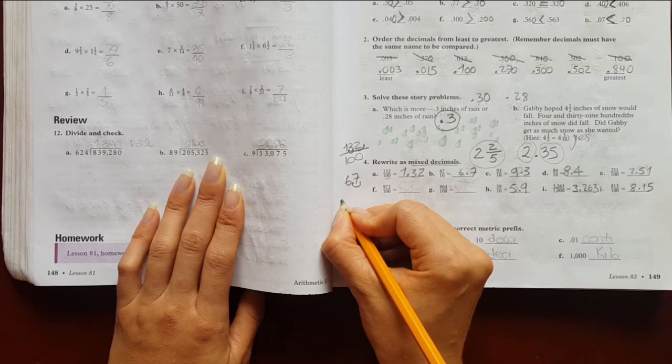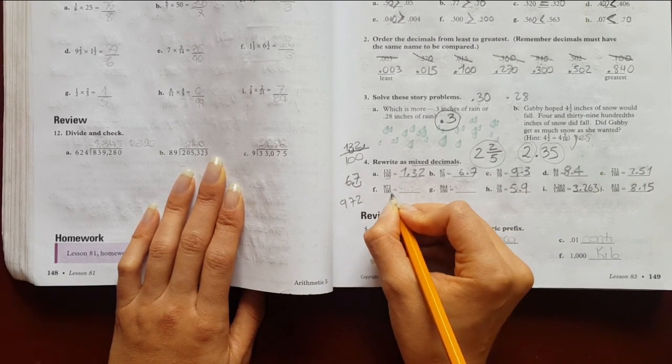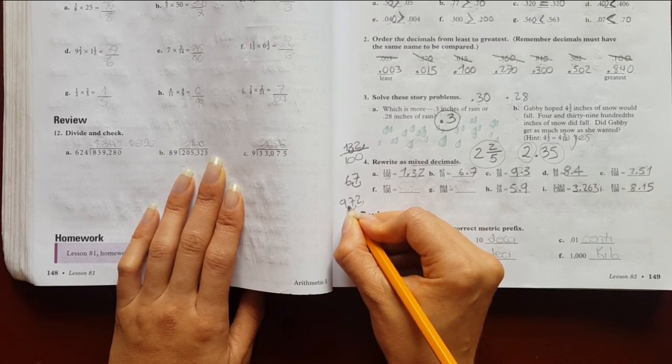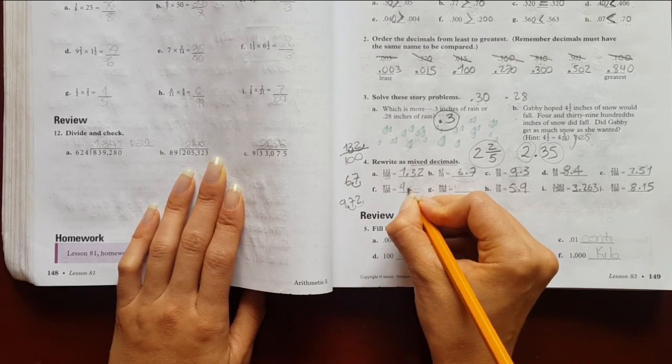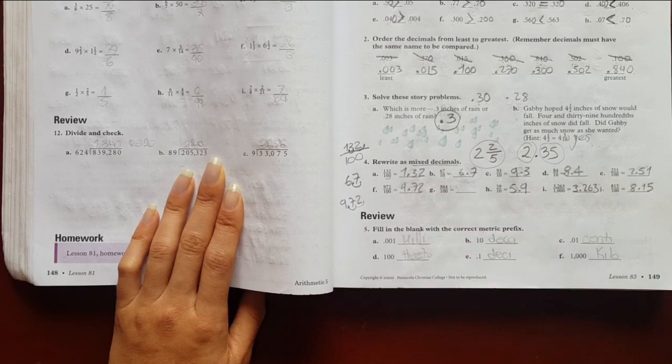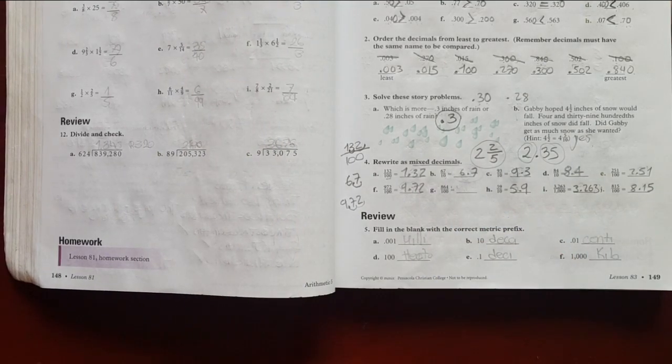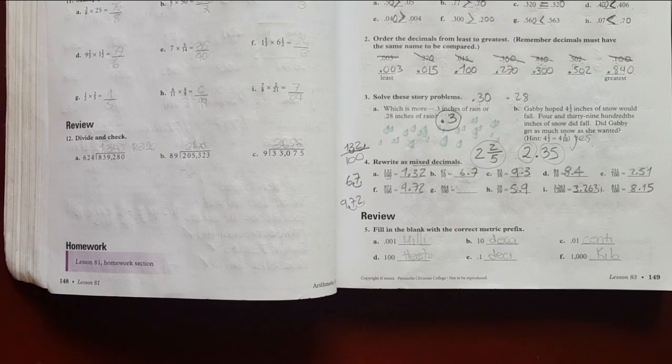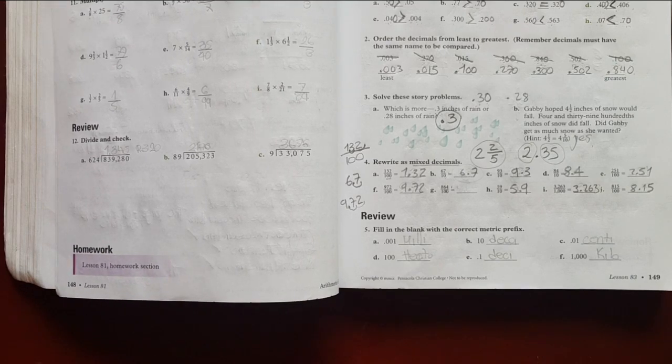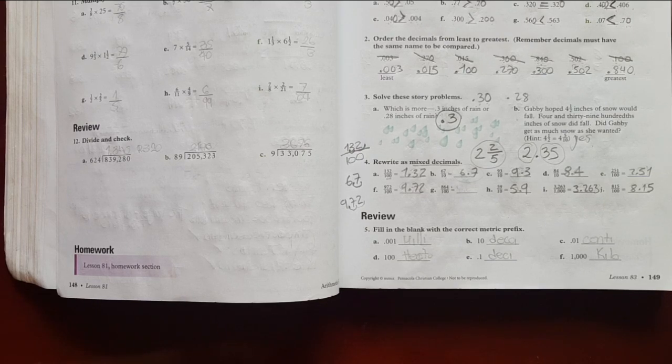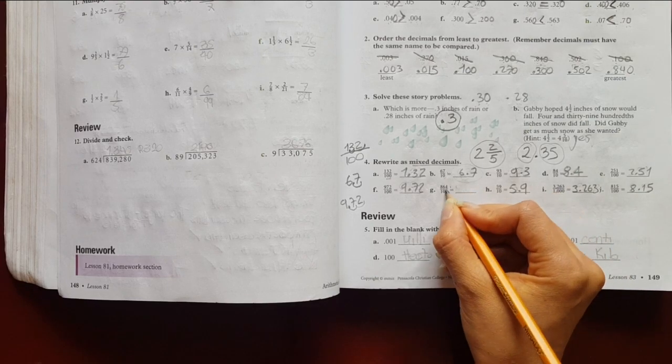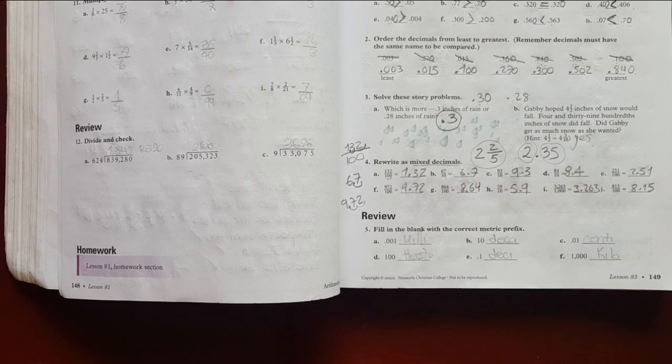Vamos a hacer el sesenta y siete acá. Cuántas veces lo debo mover? Una vez porque tengo un cero. Entonces lo tengo acá al final. Recuerda que siempre lo tengo al final. Lo muevo una vez. Entonces me queda seis punto siete. Tengo un mixed decimal. Un decimal mixto. Next, nine hundred seventy-two. Cuántas veces lo voy a correr? Dos. Uno, dos. Miren dónde quedó. Nueve punto setenta y dos. Y eight hundred sixty-four, ustedes lo pueden hacer. Let's do it, ten seconds. Ten, nine, eight, seven, six, five, four, three, two, one. So here is eight point sixty-four, right guys?